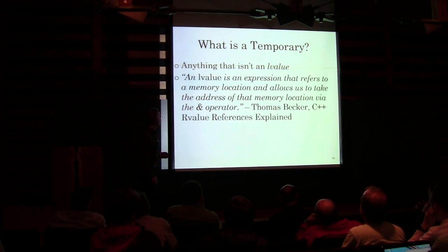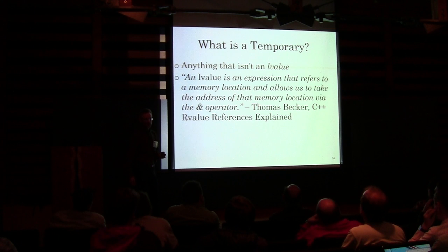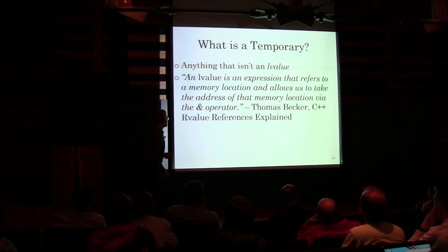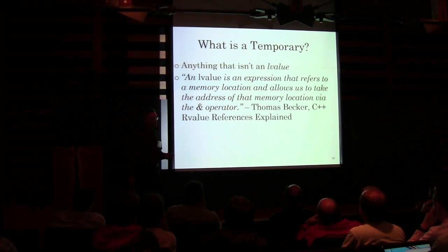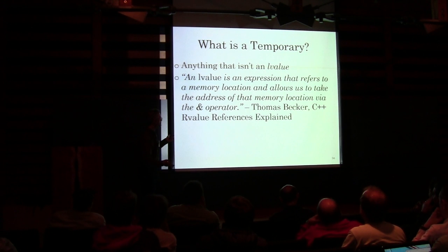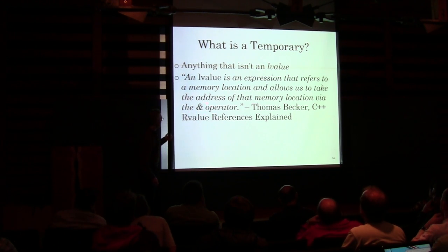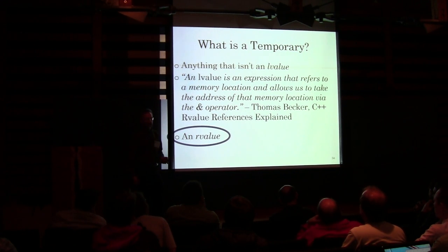I looked through the standard and any place I found a description of what an L-value is, I couldn't make any sense out of it. But I did find a description that makes a lot of sense to me: an L-value is an expression that refers to a memory location — somewhere in memory, either on the stack or free store or something like that — and it allows us to take the address of that memory location with the ampersand operator. Anything that doesn't do that is an R-value. Anything that we can't get to — that's an R-value.